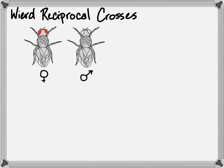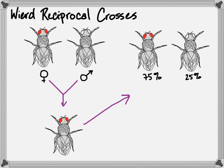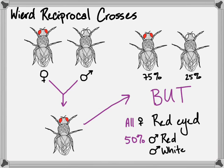When Gregor Mendel did reciprocal crosses, the genders of the parents did not make a difference to the outcome of the offspring. But in flies, there were some interesting patterns that emerged. A red-eyed female plus a white-eyed male would produce all red-eyed young. That's expected, just like Mendel's patterns. But when they crossed the F1 males and females, only the sons had white eyes. You still got that 3 to 1 ratio — 75% red, 25% white-eyed — but all of the females were red-eyed, and 50% of the males were red-eyed and 50% were white-eyed.